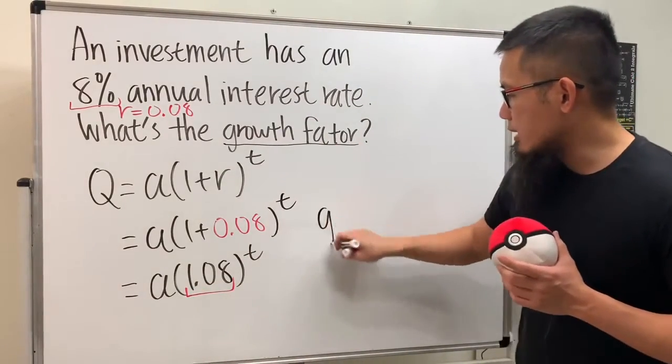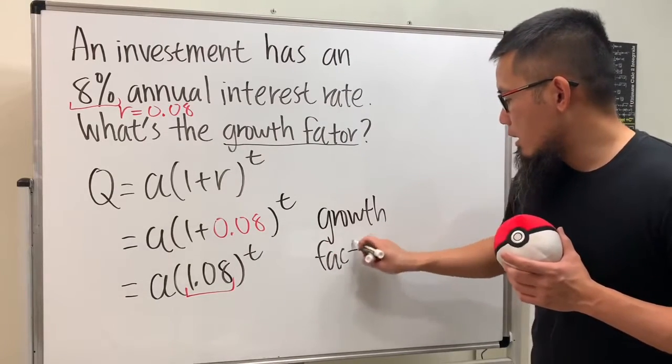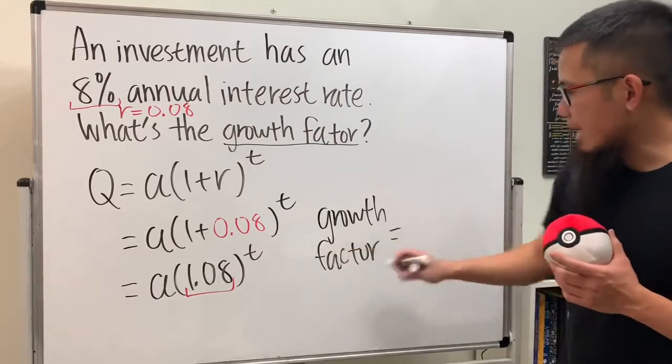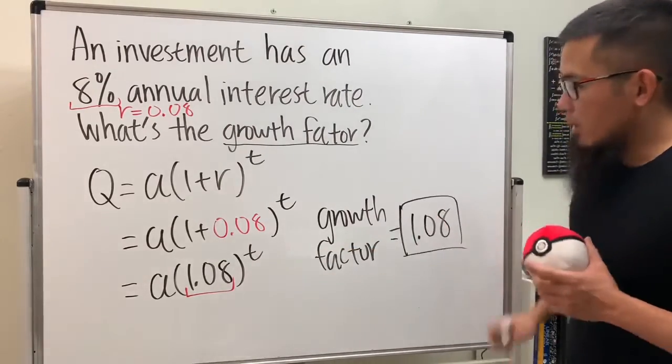just write this down right here for you. The growth factor is just equal to that, the base of the exponential growth, pretty much. So this is it.